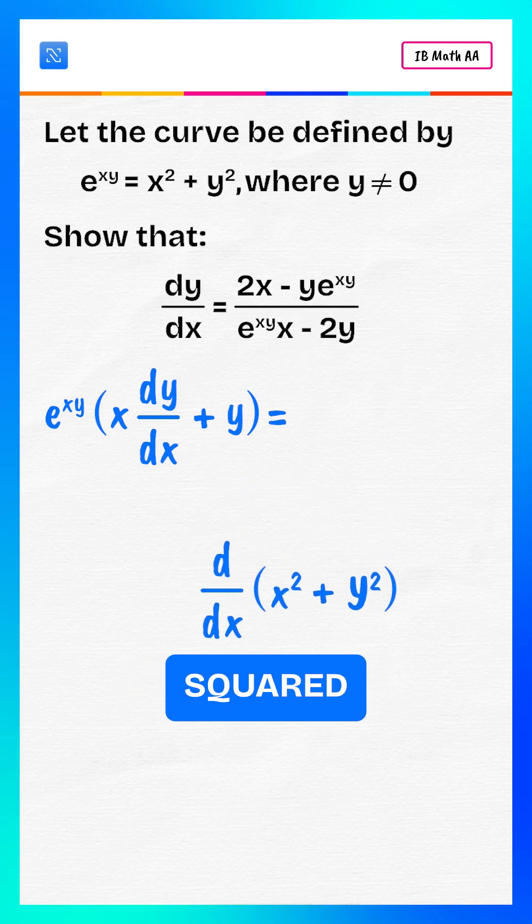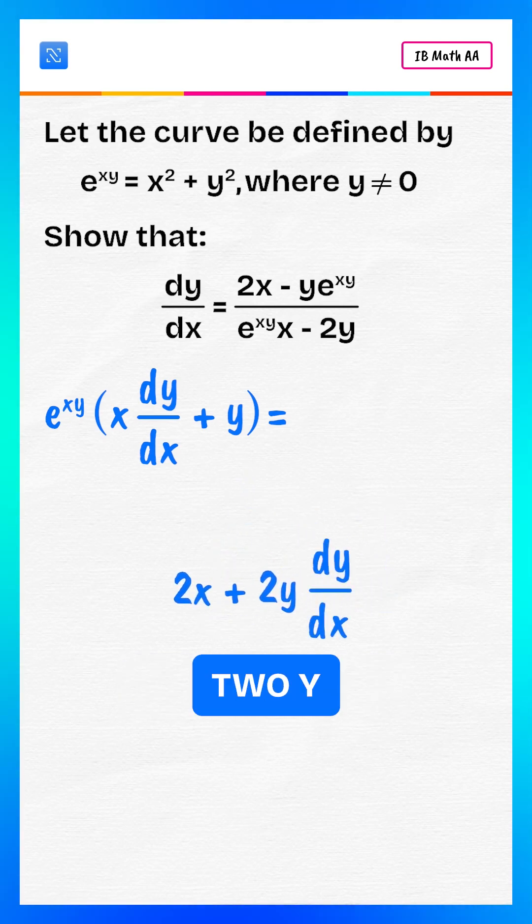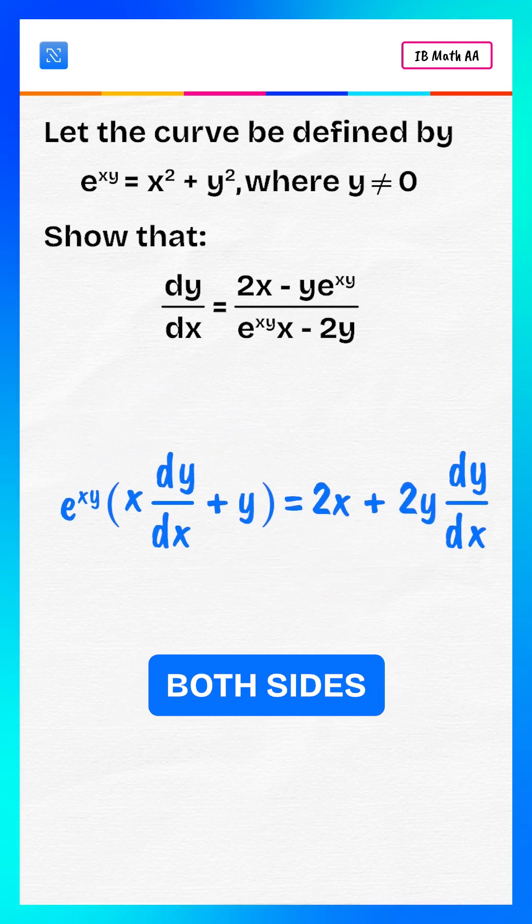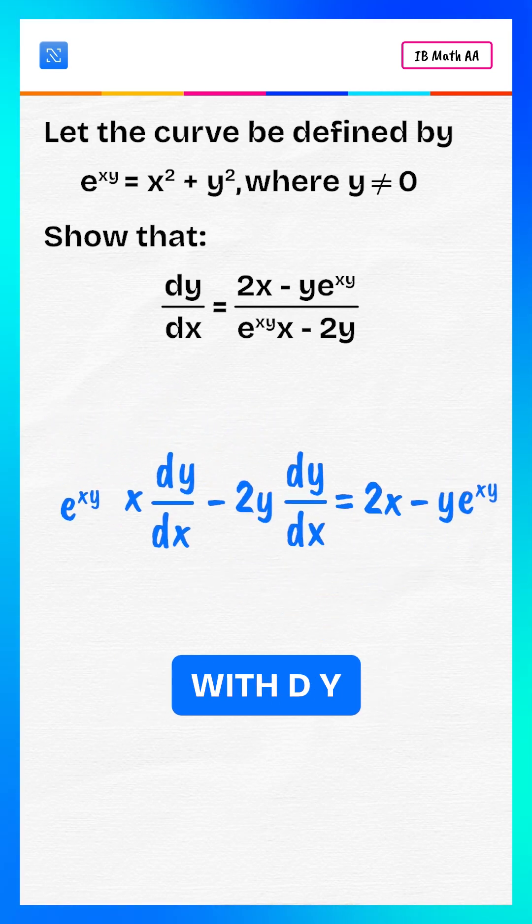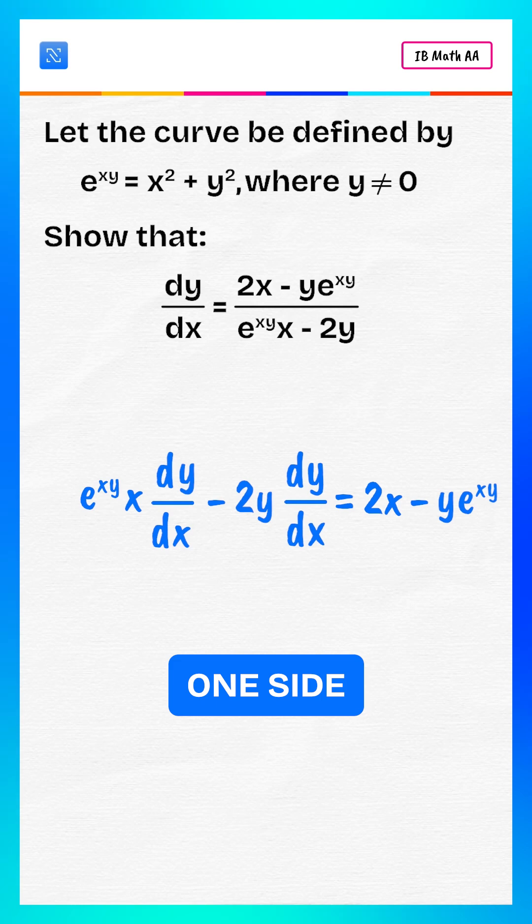Derivative of x squared plus y squared is 2x plus 2y multiply dy by dx. Equating both sides, move all terms with dy by dx to one side.